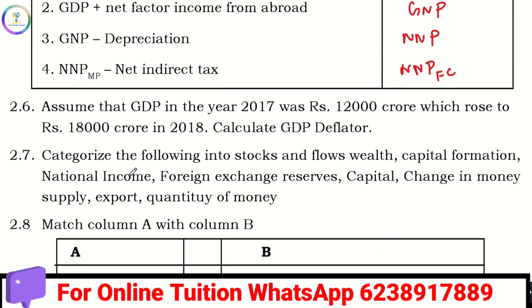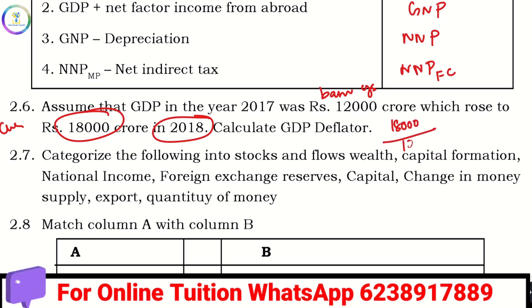I calculated the GDP deflator for 2017 and 2018. The current year GDP is 18,000 and the base year GDP is 12,000. The formula is: current year GDP divided by base year GDP, multiplied by 100. So 18,000 divided by 12,000 into 100 equals 150, meaning prices are increasing.